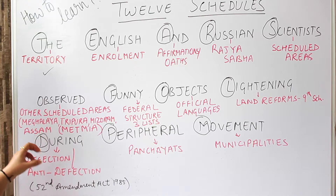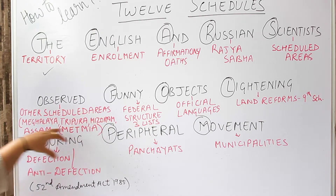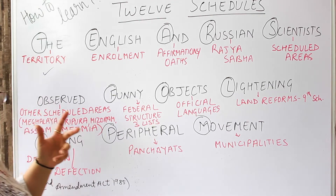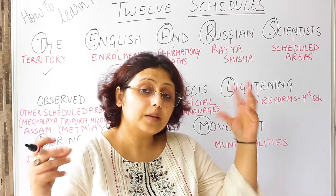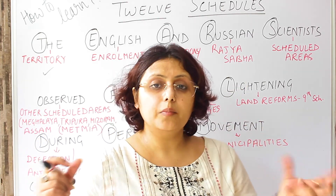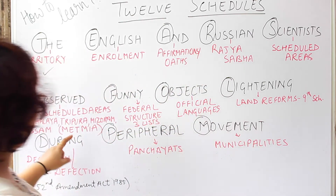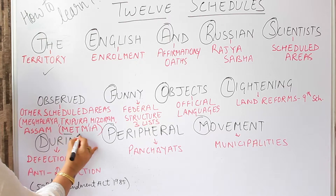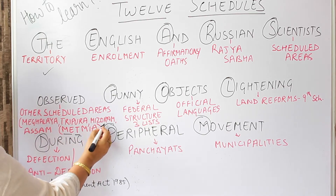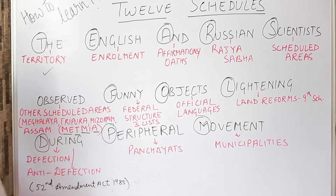To remember the other scheduled areas — Meghalaya, Tripura, Mizoram, and Assam — there's also a sub-mnemonic: METMIA. M-E for Meghalaya, T for Tripura, MI for Mizoram, and A for Assam. So METMIA helps you recall all four states of the 6th schedule.